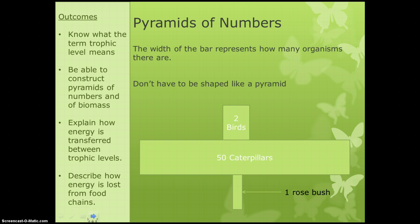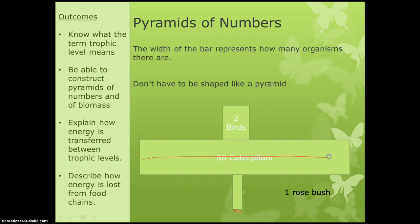The other option is a pyramid of numbers. For this one, it doesn't have to be pyramid-shaped, so don't panic if it doesn't look like a pyramid. What we do is instead of the width representing the mass, the width represents how many organisms there are. So here we've got one rosebush, which has got a really narrow bit, then 50 caterpillars which is really big, and then our two birds which go after. So this shows us how many organisms there are, and it's another way of showing how the food gets passed along.